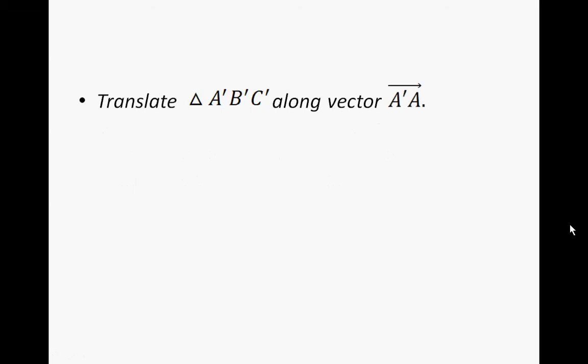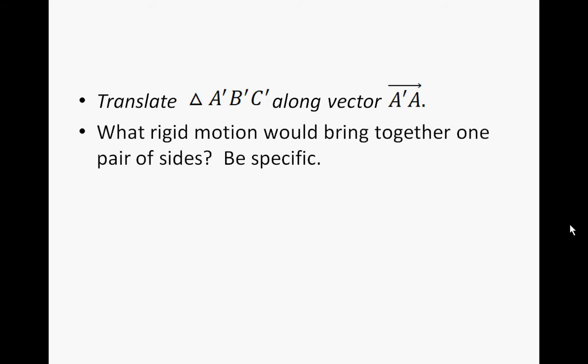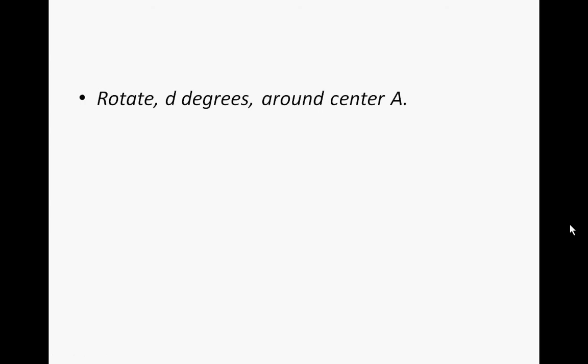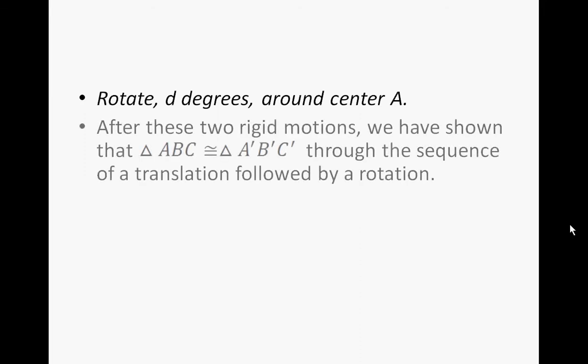We would translate triangle A prime, B prime, C prime along vector A prime A. We could use another vertex — B prime B or C prime C — but for this example we'll use A prime A. Then, what rigid motion would bring together another pair of sides? We would rotate D degrees around center A, because vertex A becomes our point of rotation. After these two rigid motions, triangle ABC is congruent to triangle A prime, B prime, C prime through a sequence of translation followed by a rotation.